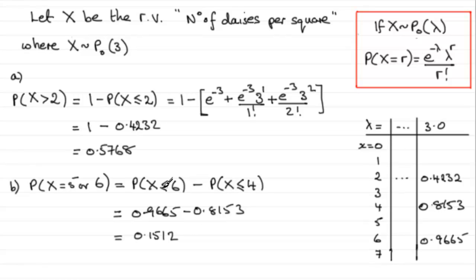Or as I say, you could do it just by working out the probability X equals 5 and 6 and add them together using this formula.